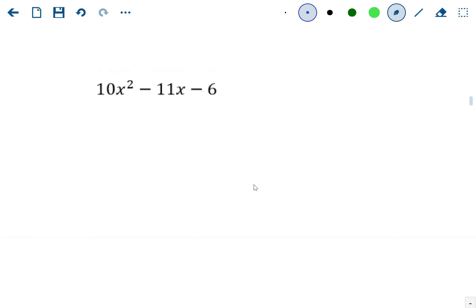Remember swing method involves swinging the first number to the back. Everyone knows factoring when a is not 1 is a lot harder than factoring when a is 1. So the swing method makes it 1.